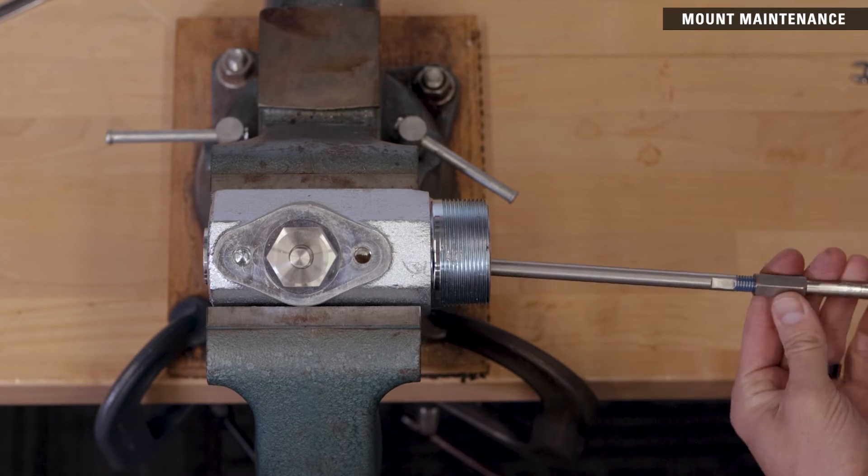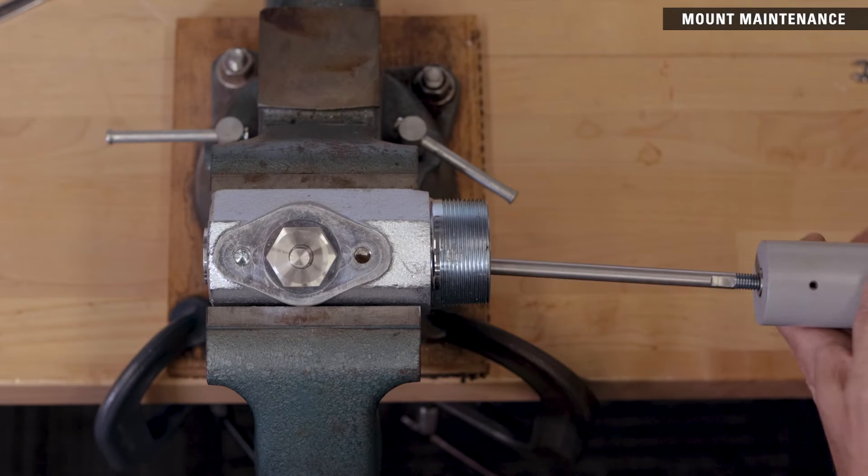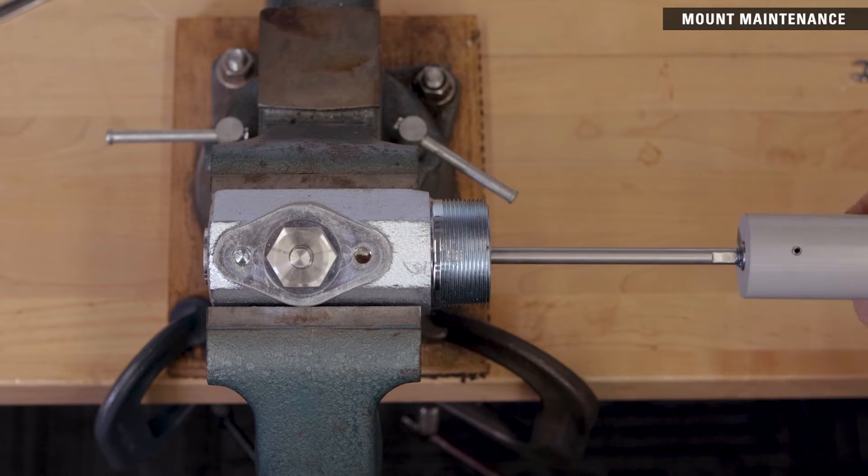If you're using a vertical displacer, use the coupling to connect it to the displacer arm. If you're using a horizontal displacer, thread the displacer directly onto the displacer arm.